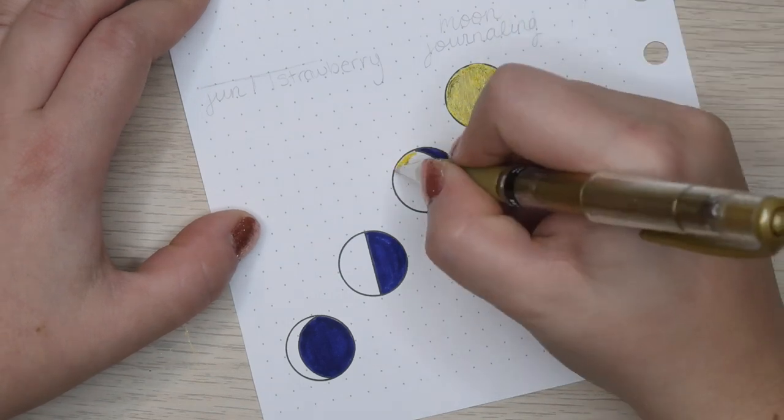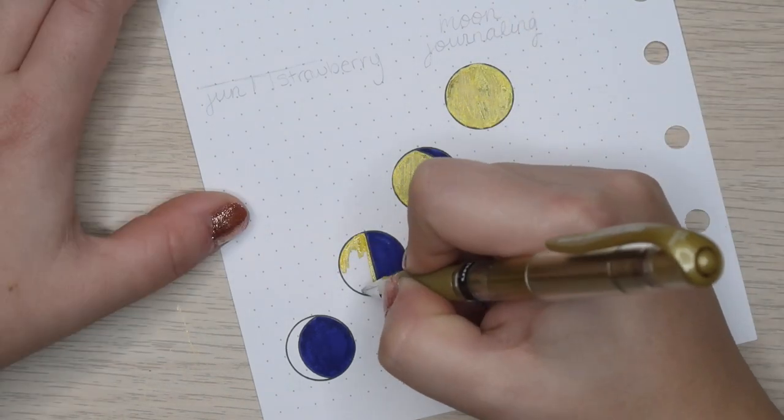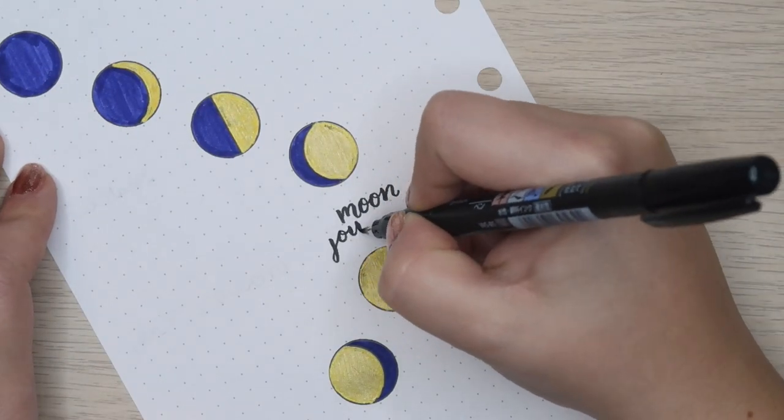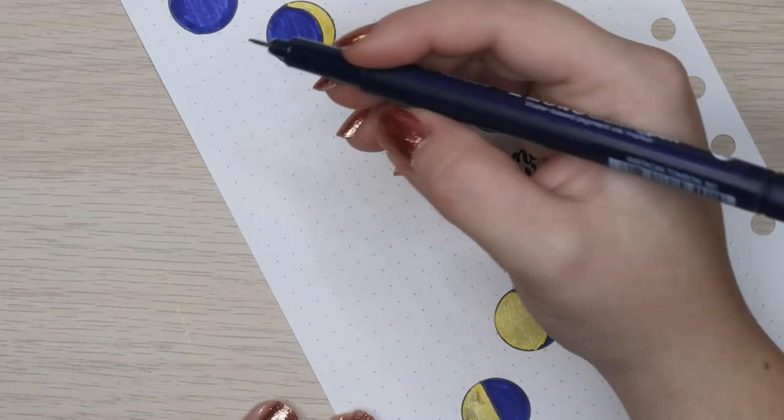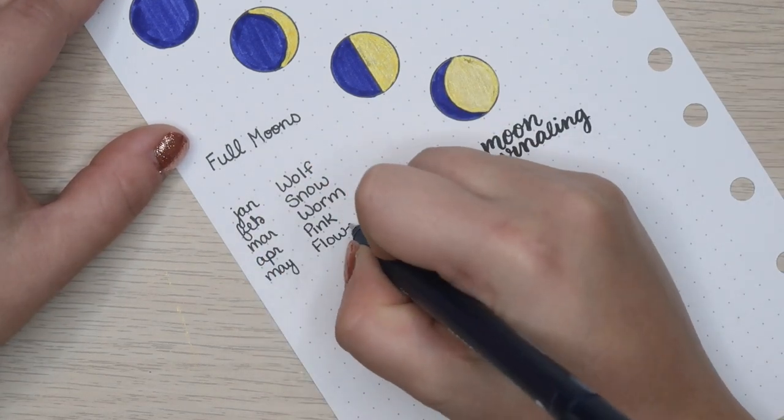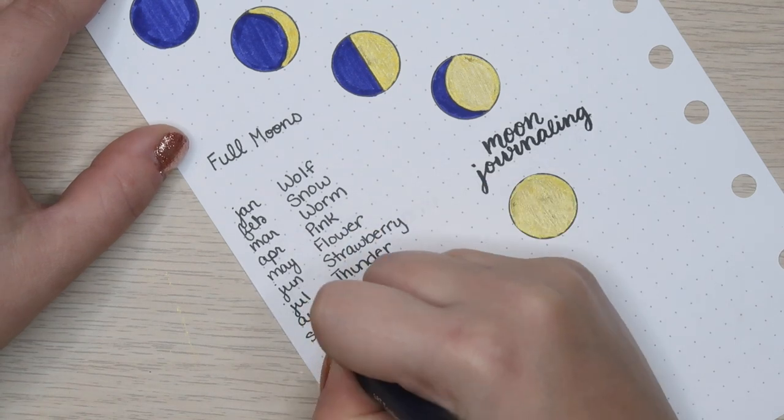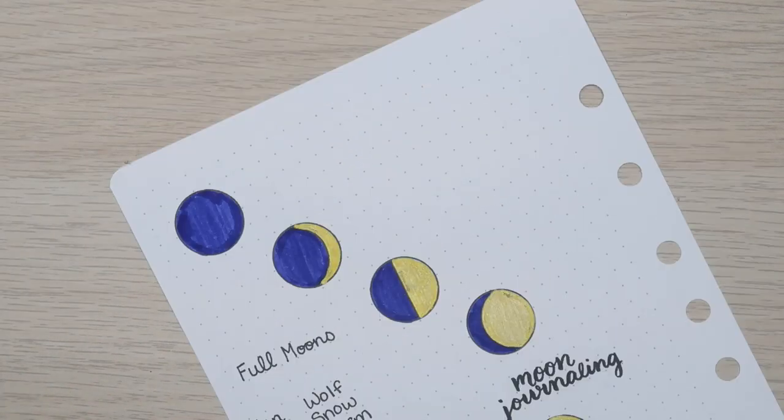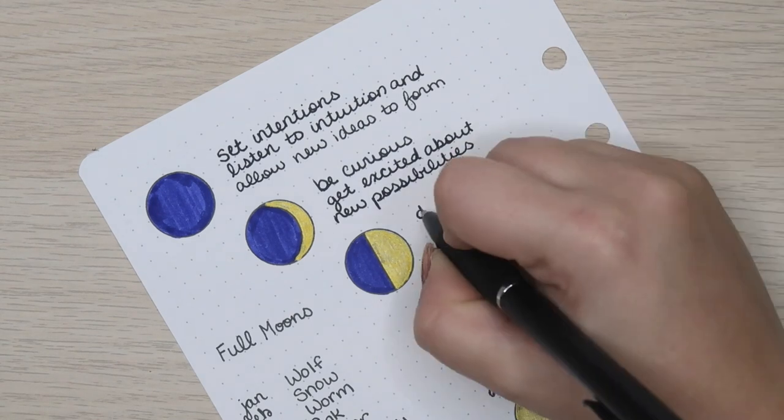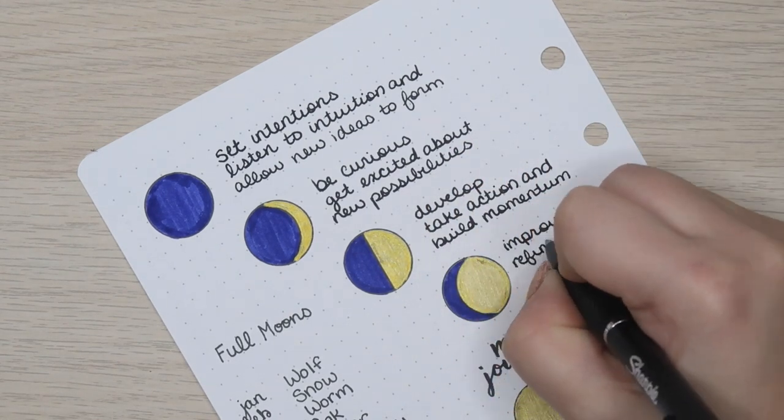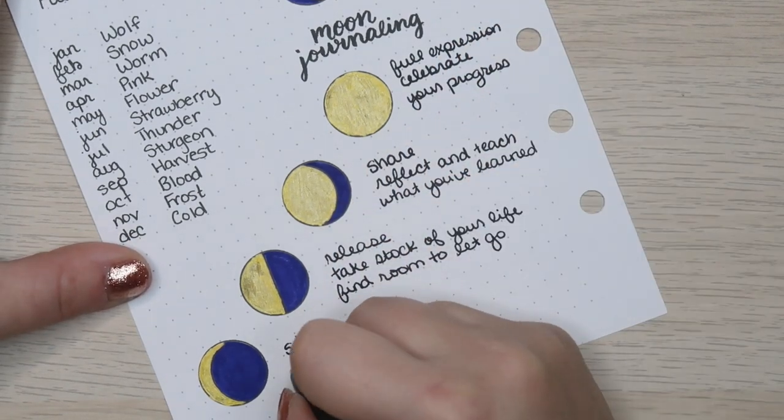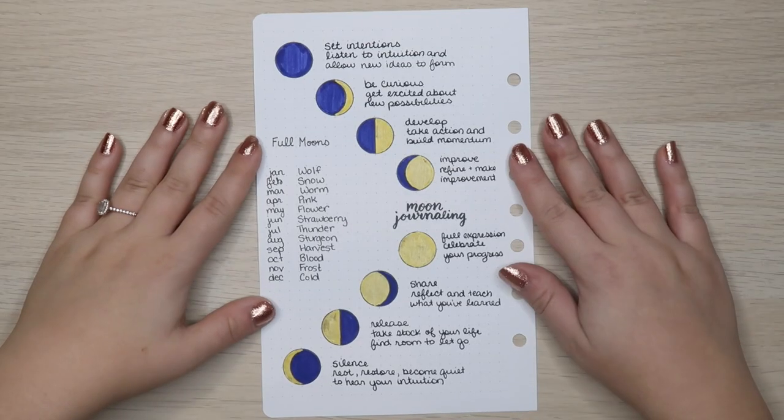So much so that I bought a moon journal specifically for moon journaling. And that is what inspired this spread. The first page focuses on moon journaling itself. So I have all eight phases of the moon from new moon to waning crescent. And next to each one, I've written the theme and the meaning of each one as it relates to moon journaling. And this is taken straight out of my moon journal, which is the book I talked about in my stationary haul. I've also listed out the unique names for each month's full moon. Really, there's four or five names for each moon. So it varies depending on the list you're referring to. But each one is significant to moon journaling in a different way. So I just wanted to have a quick at a glance of the names of the full moons.